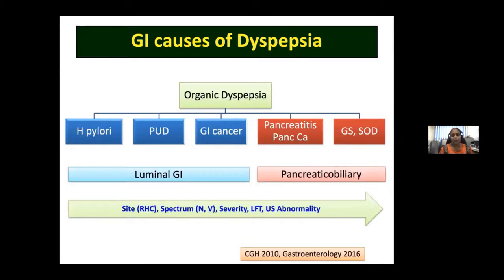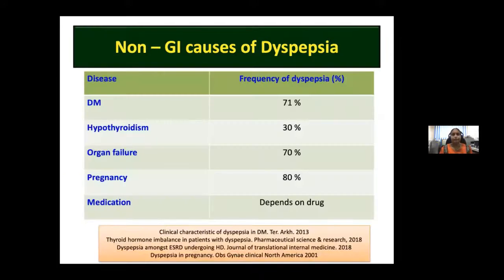Non-GI causes of dyspepsia include diabetes, hypothyroidism, organ failures, pregnancy, and medications. About 70 to 80 percent of patients with these conditions have dyspepsia. It is very important in history-taking to look for these non-GI causes.